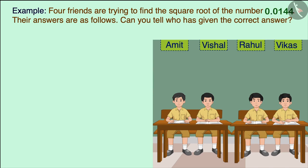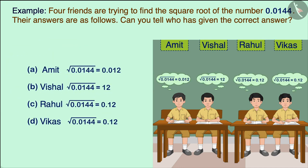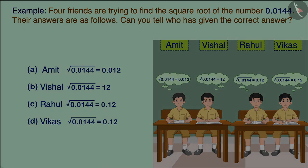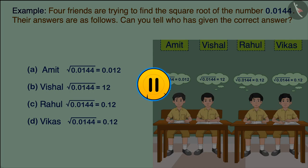Four friends are trying to find out the square root of the number 0.0144. Their answers are as follows. Can you tell who has given the correct answer? You may pause the video here and solve the question yourself.